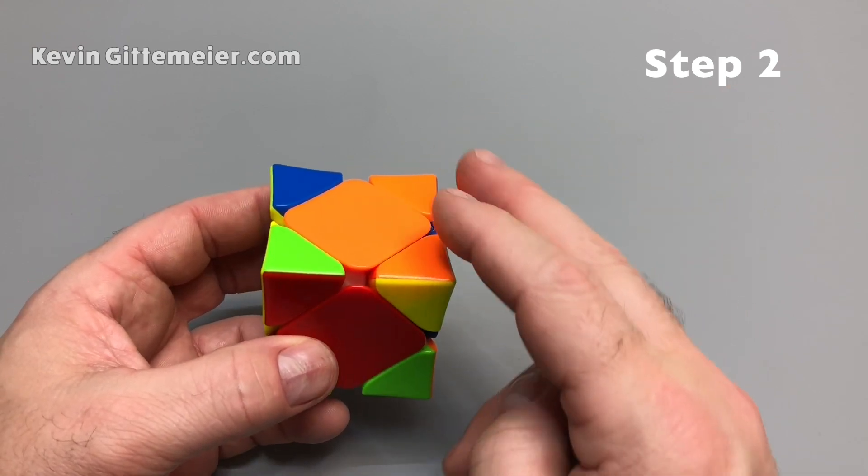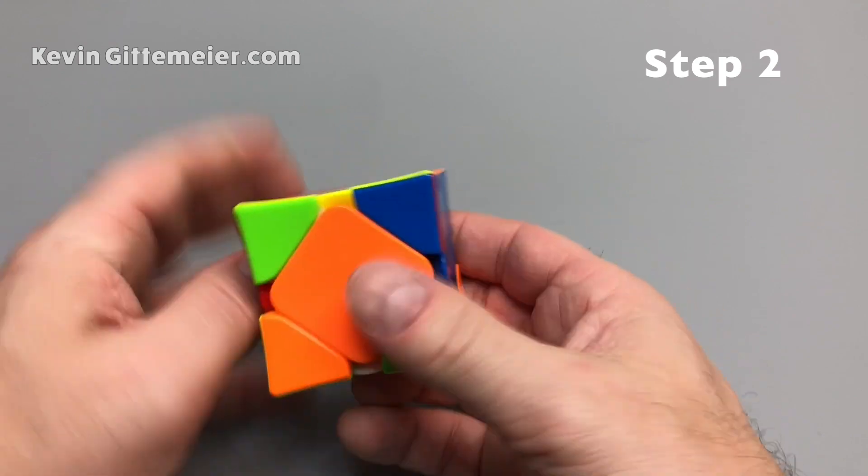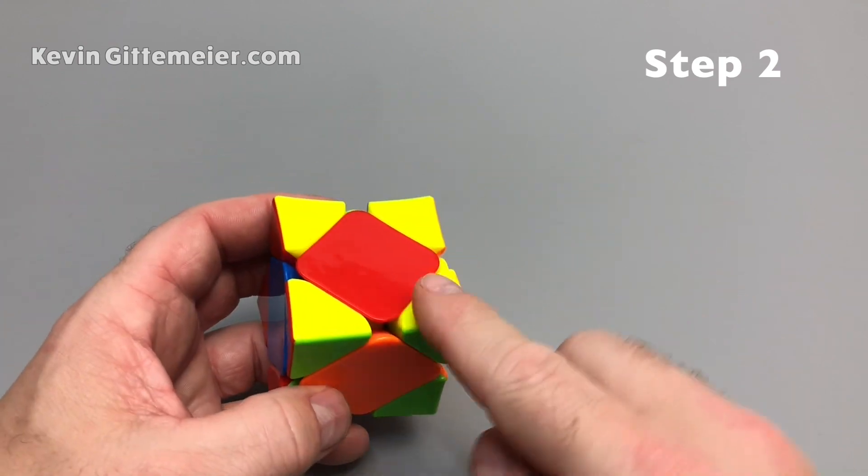I'll explain later how, but right now just understand the result. Down, down, up, up. It flipped all the yellows up.